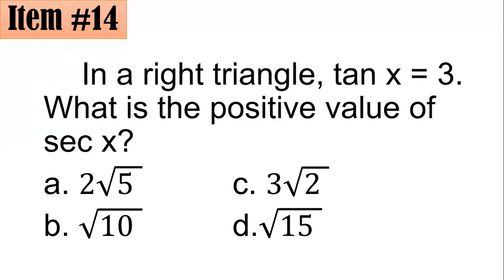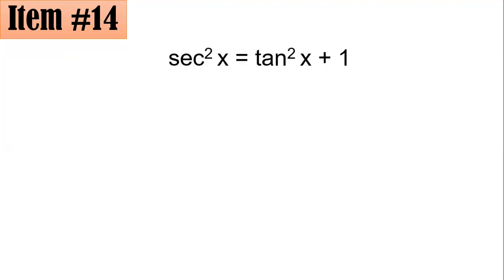Number 14: In a right triangle, tangent x equals 3. What is the positive value of secant x? Did you go for 2 square root of 5, square root of 10, 3 square root of 2, or square root of 15? For this problem, I'll use the trigonometric identity: secant squared x equals tangent squared x plus 1. This identity is related to the Pythagorean theorem.